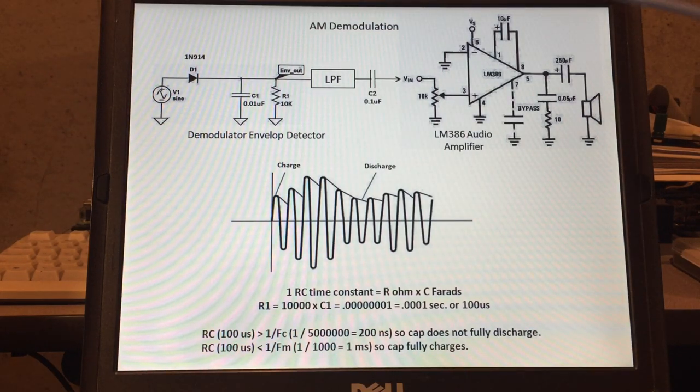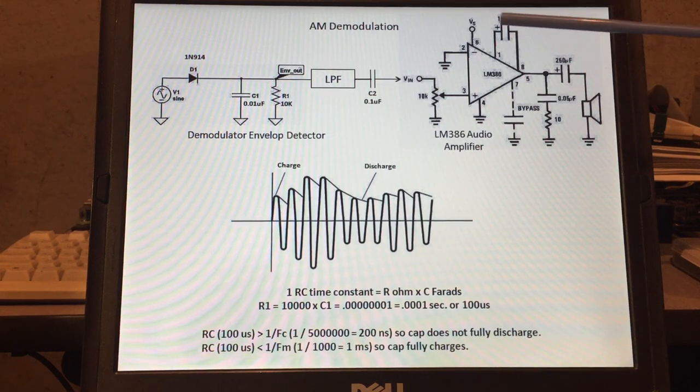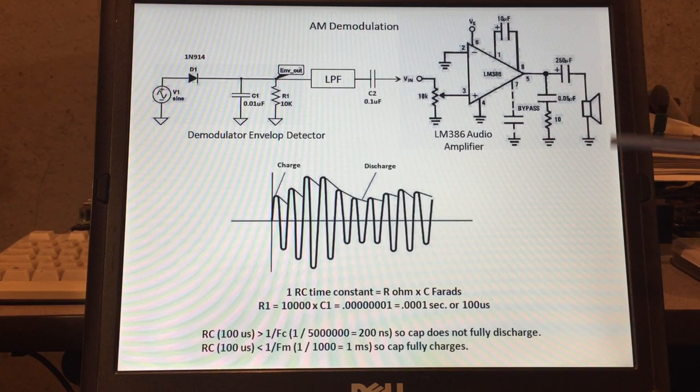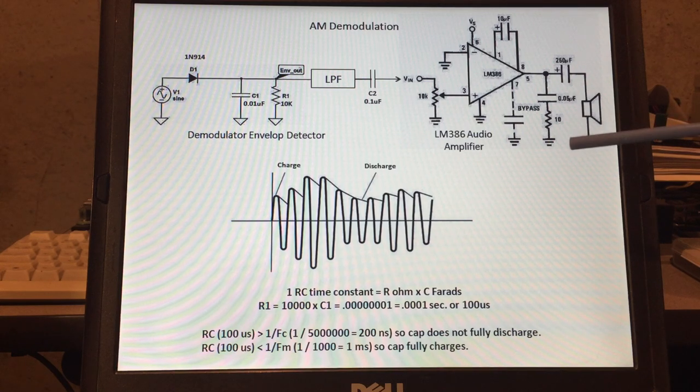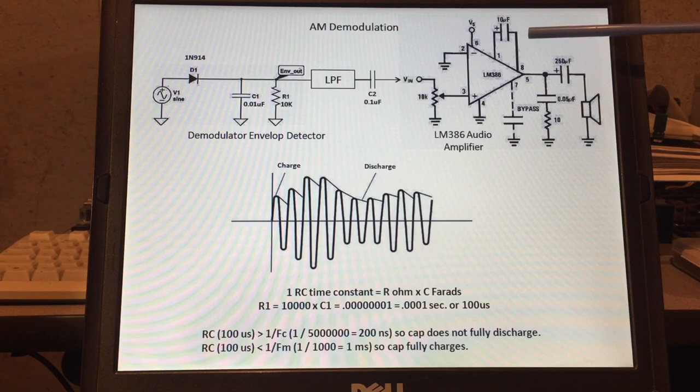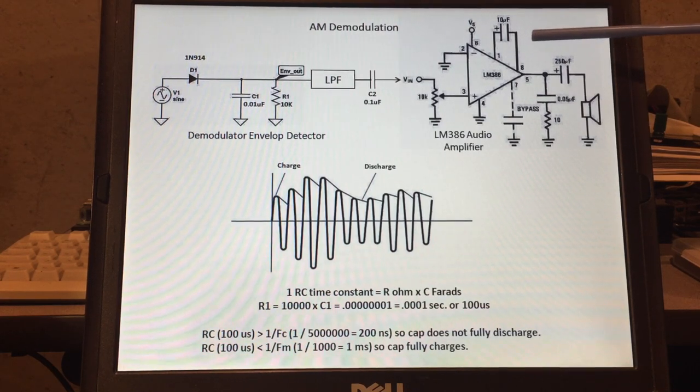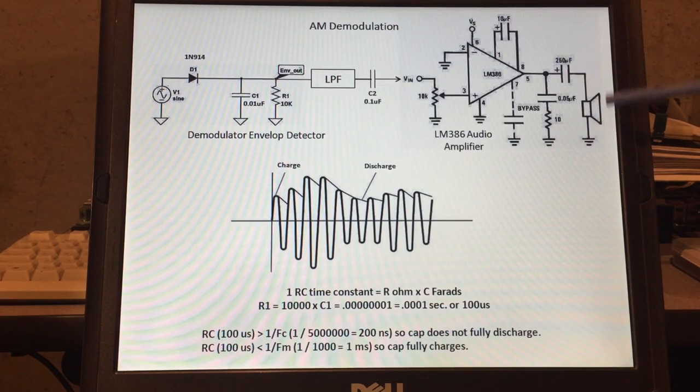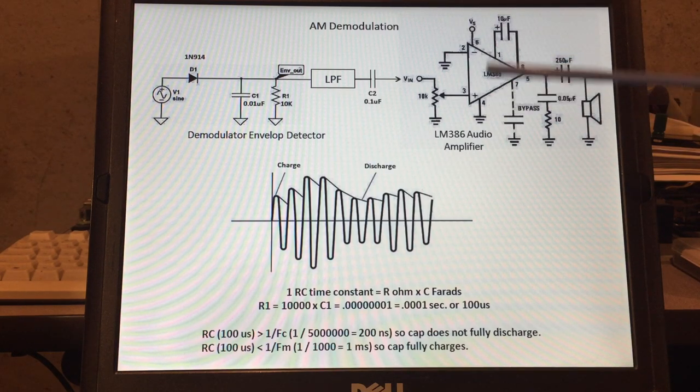What I'm using for my demonstration is an LM386 amplifier. It has an internal gain of 20 and can be modified adding this 10 microfarad capacitor to give it a gain of 200 and then I have it driving a speaker. So this is a basic audio amplifier. An op amp can be used here as well. So let's see what goes on in the circuit.